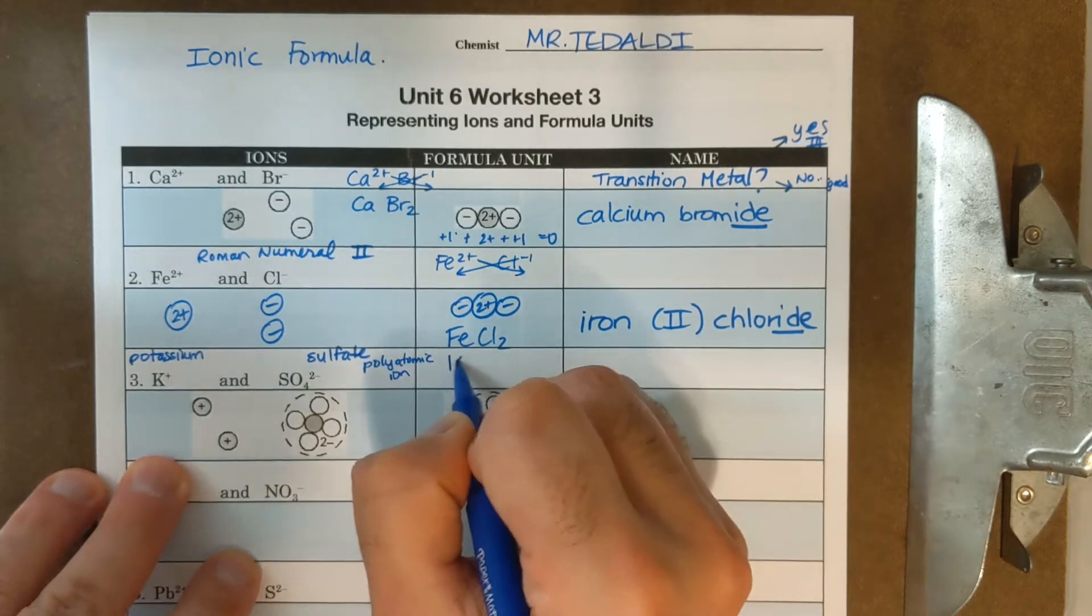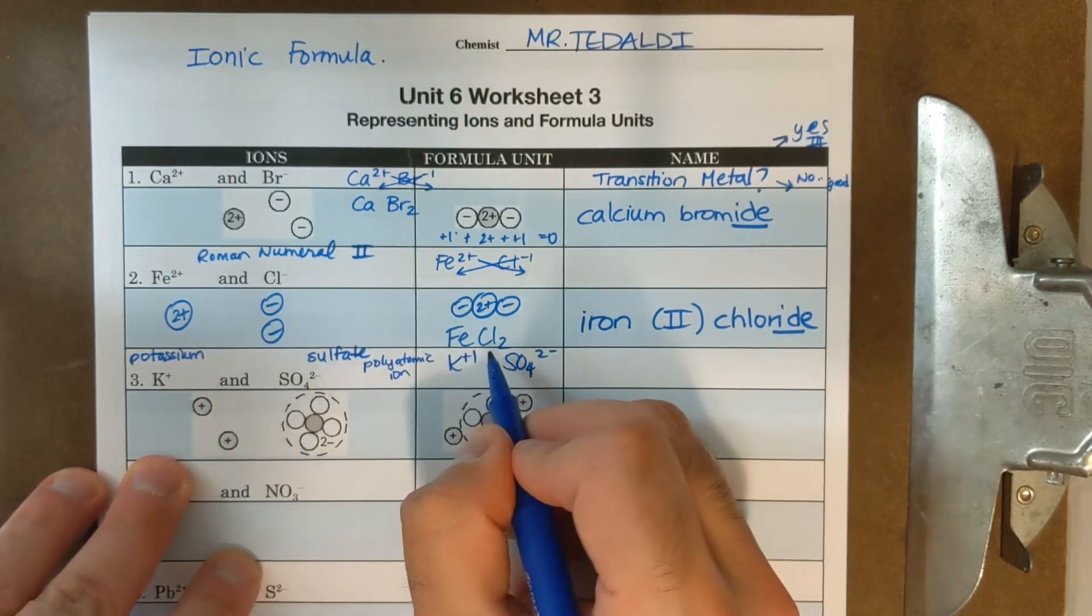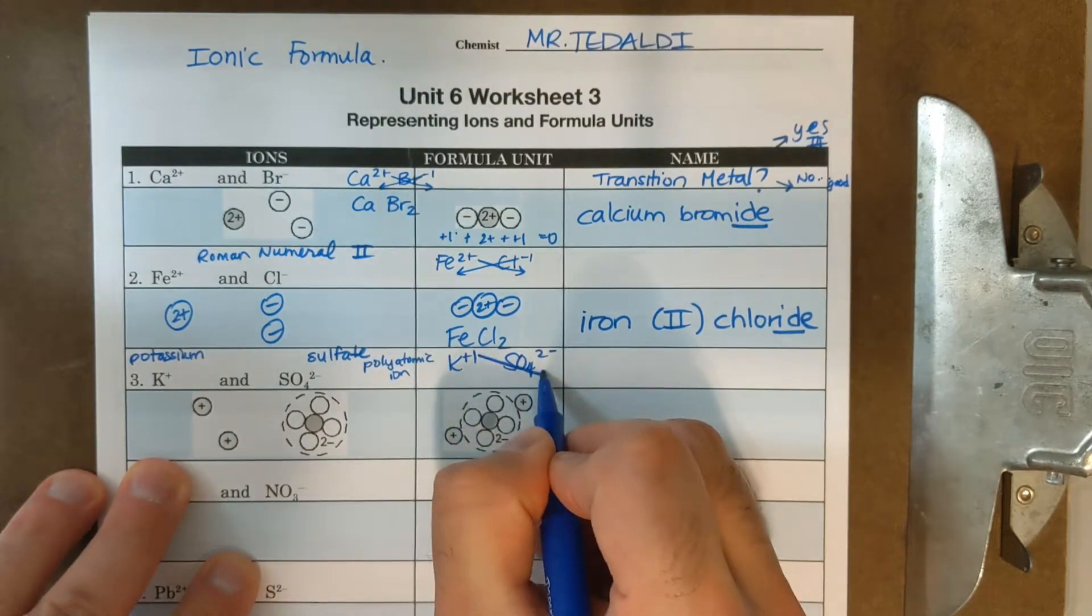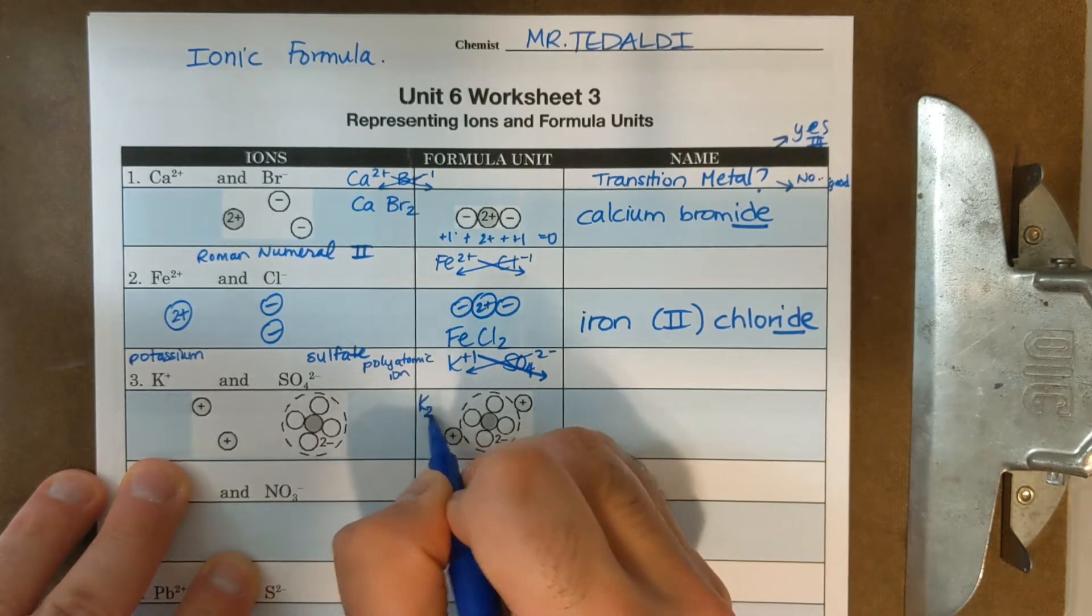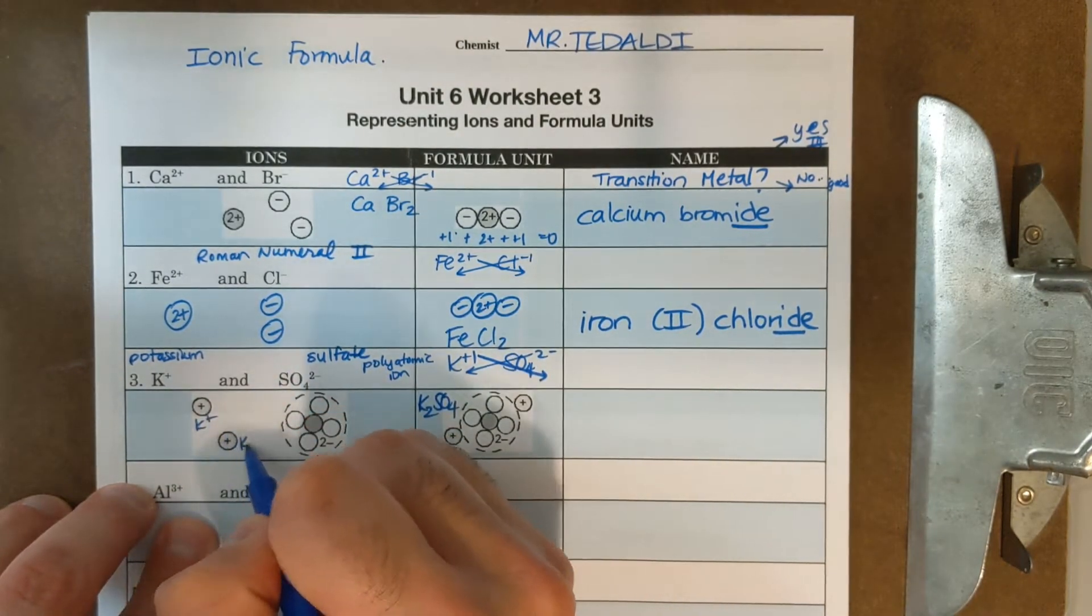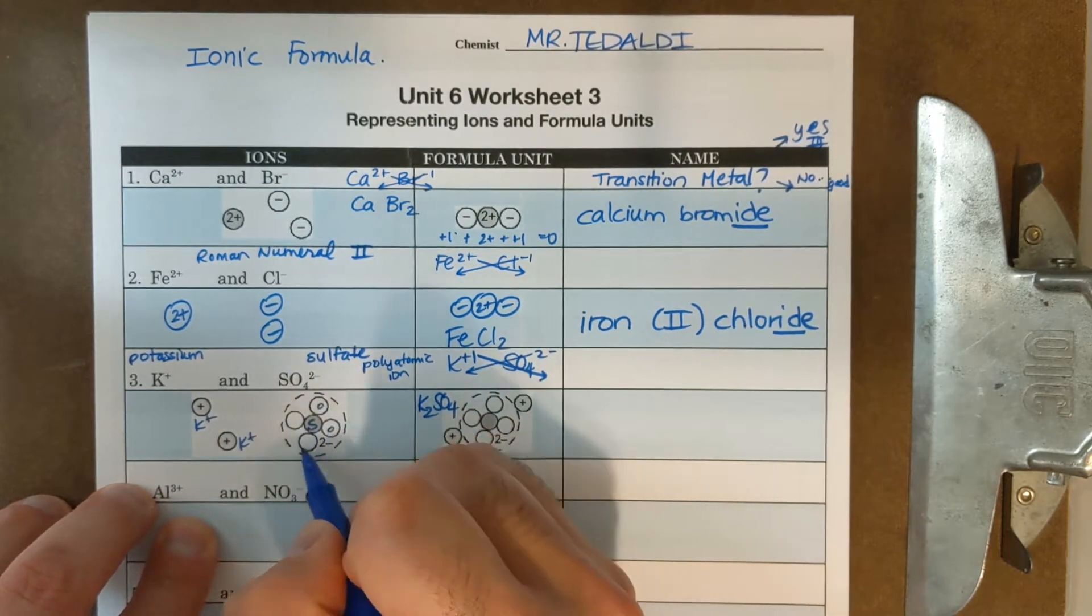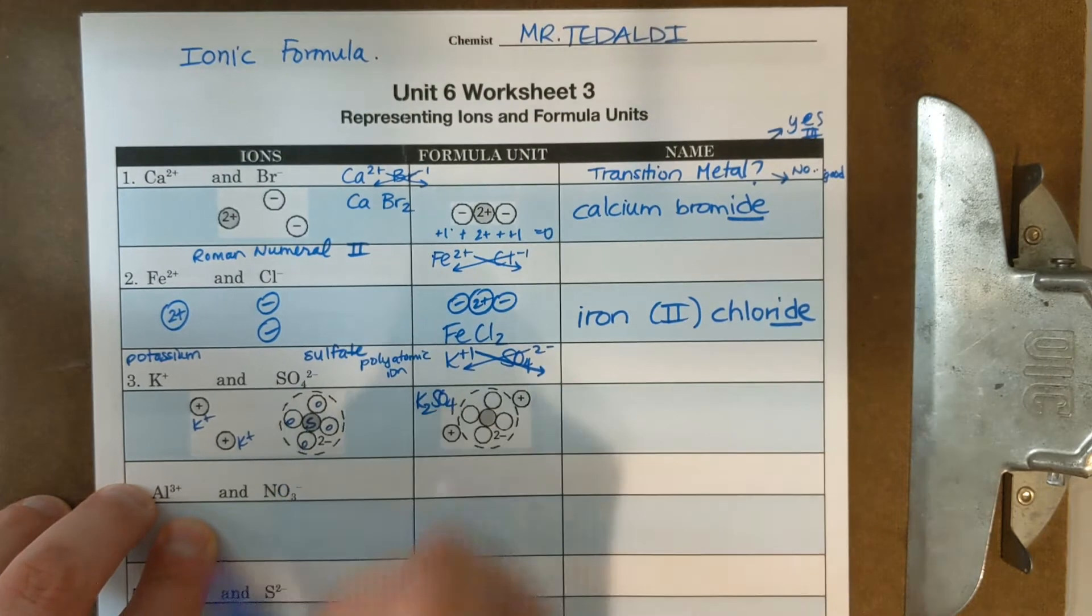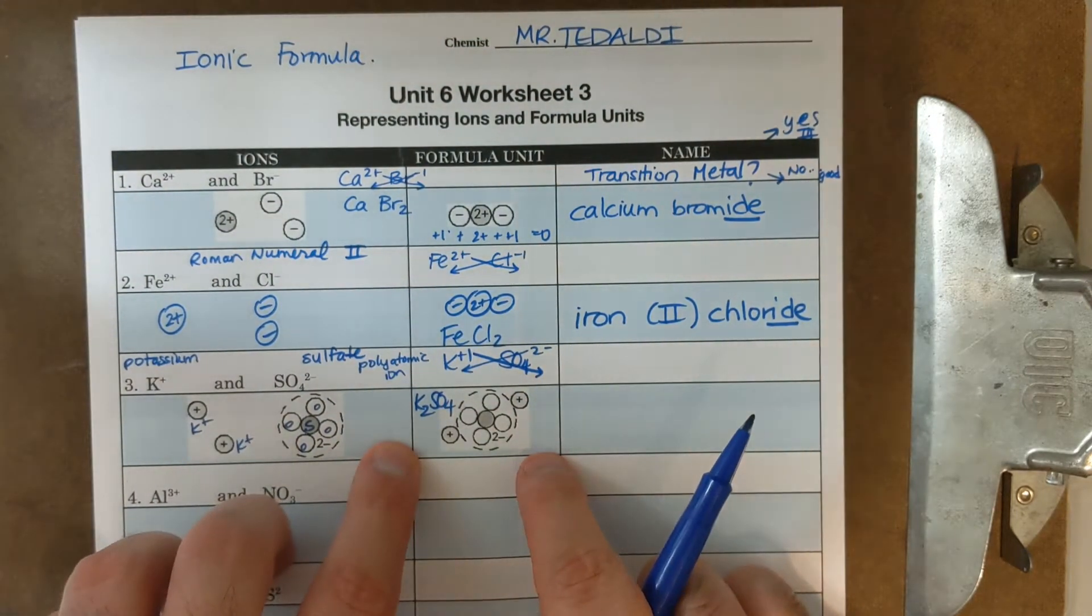And I could do the crisscross method with this one, SO4 two minus. This one's a little bit simpler. I bring down one. I only need one SO4. I bring down two. It's going to be K2 SO4. So I'm going to need two K pluses. And I could draw my SO4 like this. This is S. And then I have four O's. And overall, it forms a minus two charge.